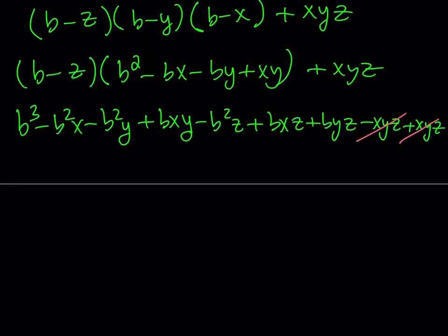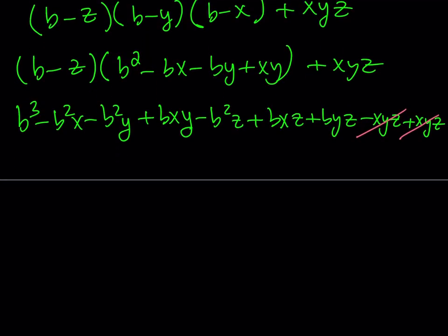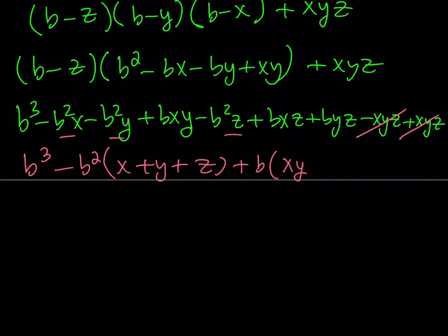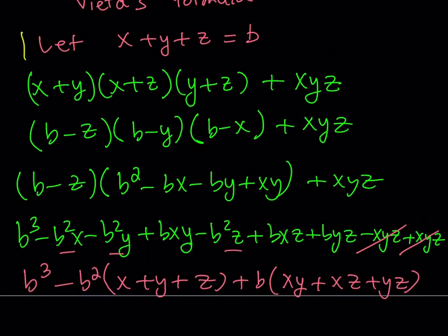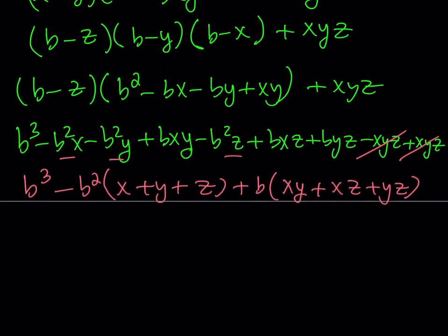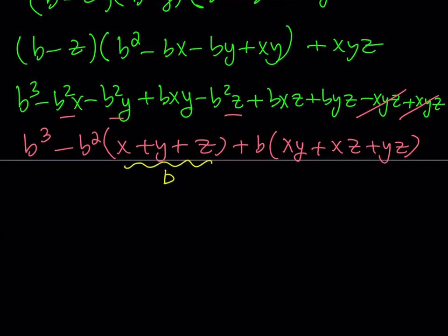The remaining terms can be arranged as follows: isolate the b³, then factor b² out of the terms containing b², which gives −b²(x + y + z). Then the terms containing b can be written as b times the quantity (xy + xz + yz). Now, remember we assumed x + y + z = b, so −b²(x + y + z) becomes −b² · b = −b³. Does that make sense?